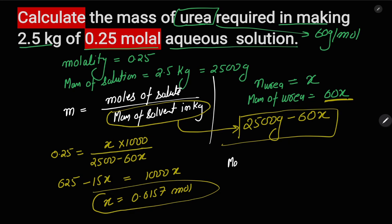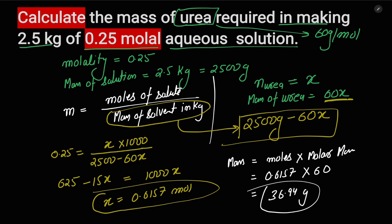Mass equals number of moles times molar mass. The number of moles we have calculated are 0.6157, the molar mass of urea is 60. On solving, it comes out to be 36.94 grams.